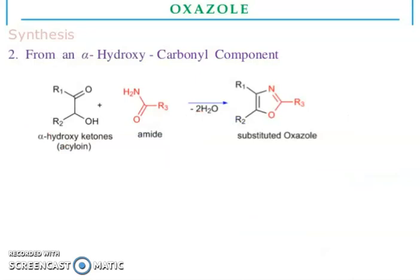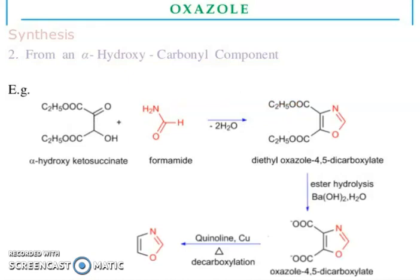Synthesis from an alpha-hydroxy-carbonyl compound. You can see here alpha-hydroxy-ketones react with amide to give substituted oxazole. From an alpha-hydroxy-carbonyl compound, alpha-hydroxy-ketosuccinate reacts with formamide, dehydration occurs, then it gives diethyl oxazole-4,5-dicarboxylate, and ester hydrolysis with barium hydroxide in water gives oxazole-4,5-dicarboxylate, and then quinoline-copper heating and decarboxylation occurs to give the oxazole ring.